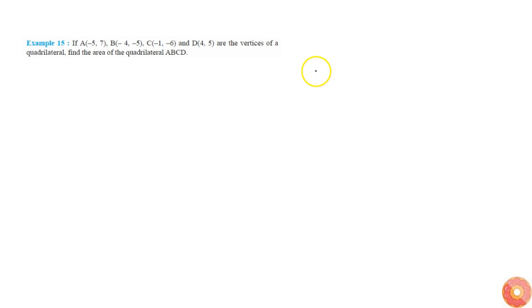Here we are given that ABCD are vertices of a quadrilateral and we are asked to find the area of such quadrilateral. So here this is A, B, C and D.